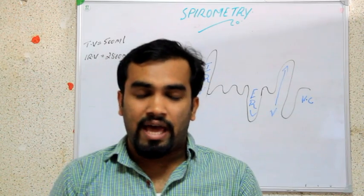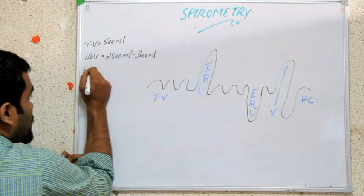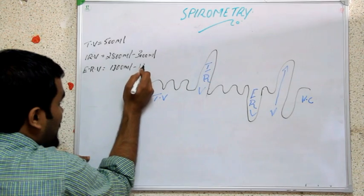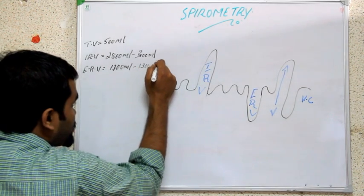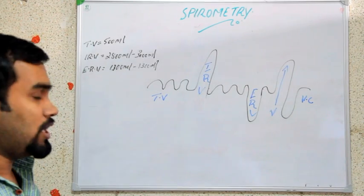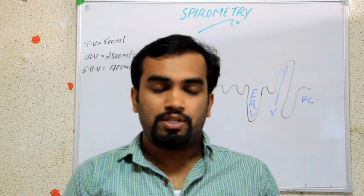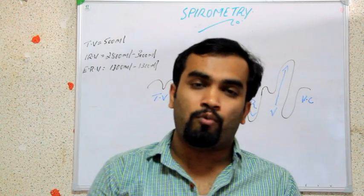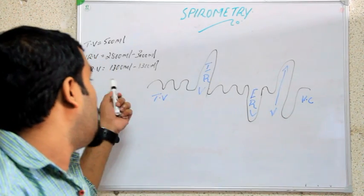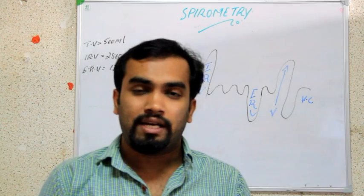ERV — expiratory reserve volume — is just the opposite: how much we can forcefully breathe out. The value is 1100 ml to 1300 ml. Notice that inspiratory reserve volume at 2800–3000 ml is much more than expiratory reserve volume. This is because atmospheric pressure outside is very high, so we can inspire more. Always remember: IRV is much greater than ERV.